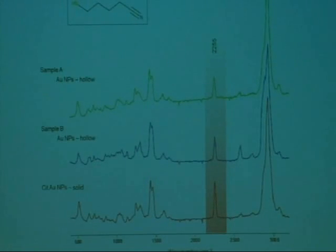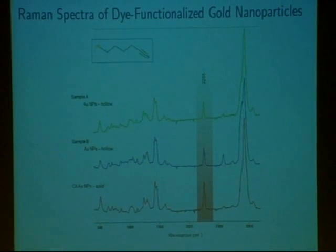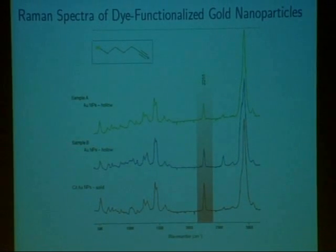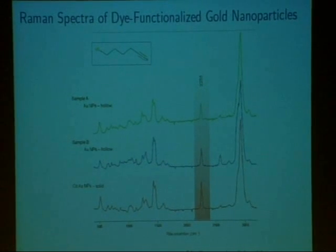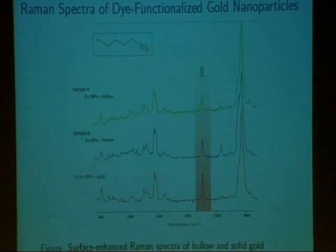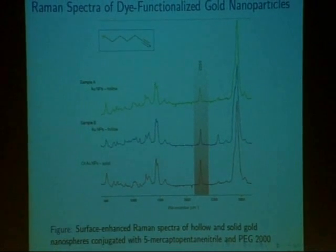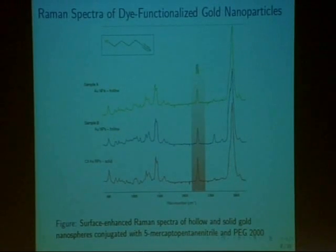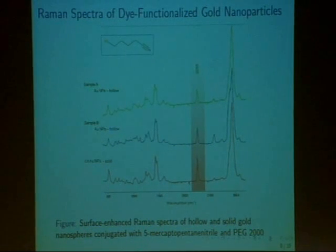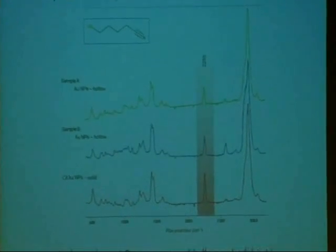First, we synthesized a batch of these functionalized nanoparticles and imaged them without cells. We took the Raman spectrum outside of cells, and they show a nice peak at around 2255 reciprocal centimeters, so it looks like we've successfully conjugated the dye to the nanoparticle surface.